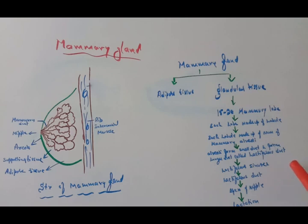These lactiferous sinuses open through the lactiferous duct, they reach the apex of the nipple, and the milk will be ejected out through a process called lactation. Areola is a region that surrounds the nipple that brings lubrication during lactation.